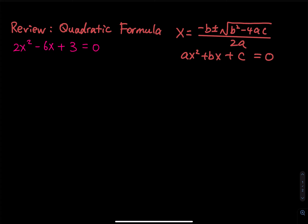Do you see that there is a b squared minus 4ac inside the square root? This is called the discriminant. Because we have a square root, remember that the square root of a positive number is positive — the square root of 9 equals 3. The square root of a negative number is undefined — the square root of negative 9 is undefined. The square root of 0 equals 0.